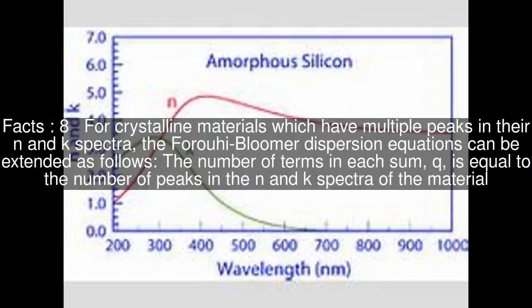For crystalline materials which have multiple peaks in their n and k spectra, the Forouhi-Bloomer dispersion equations can be extended as follows. The number of terms in each sum, q, is equal to the number of peaks in the n and k spectra of the material.